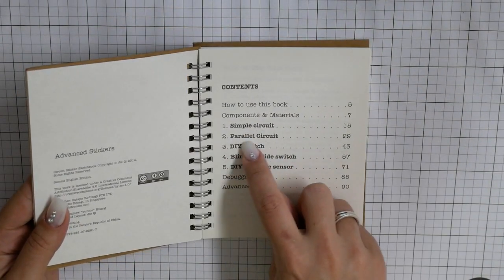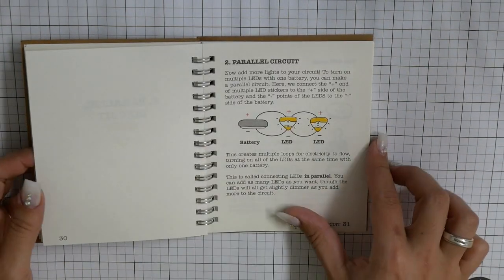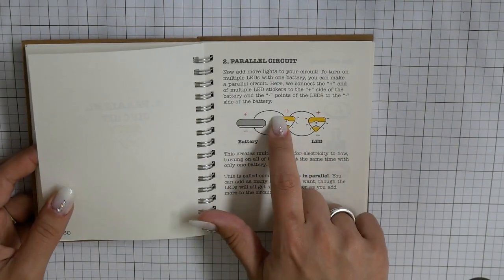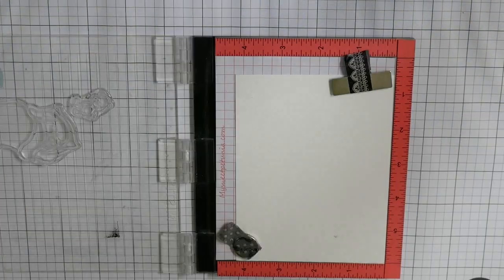Here are the Chibitronics items I am using today, and I want to create a parallel circuit. You can find all the instructions for the different circuits in our sketchbook.